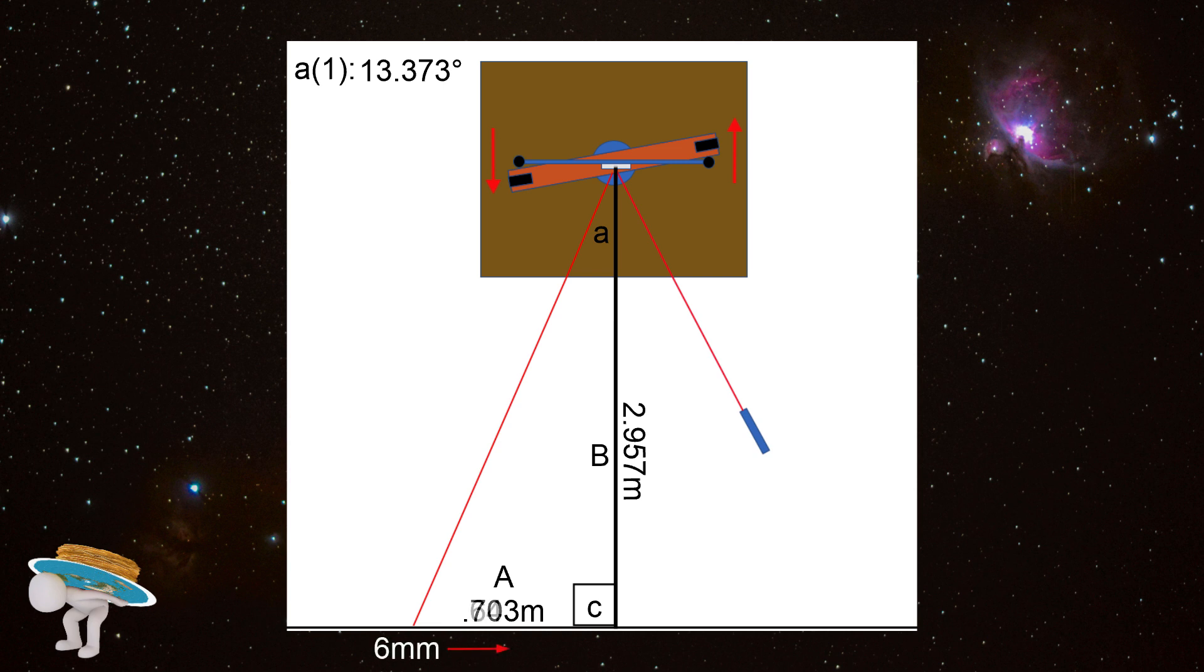This changes side A to 0.643 meters in length. Running the numbers again, we now have angle A as being 12.268 degrees. And now for a little math that I can actually understand. Our initial angle, 13.373 minus our second angle, 12.268.